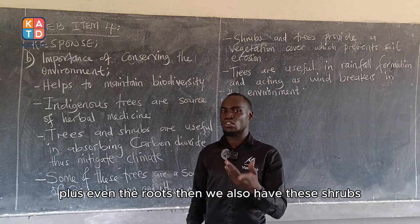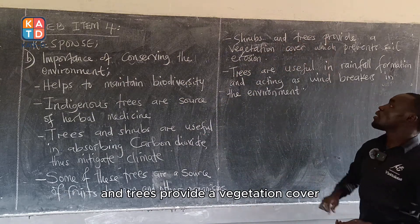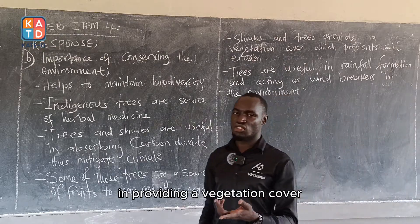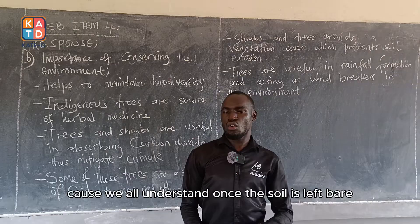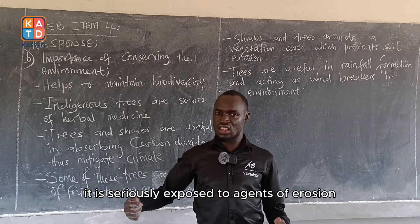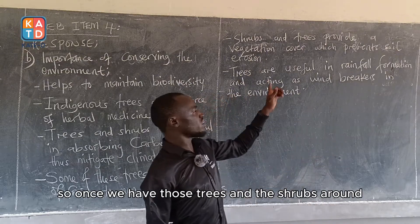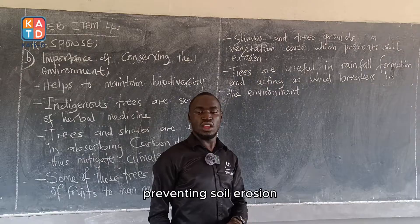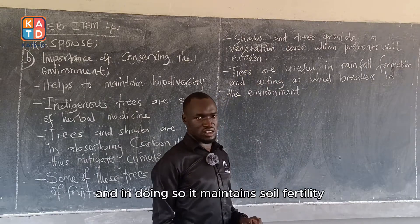These shrubs and trees also provide a vegetation cover. By providing vegetation cover, they are preventing soil erosion, because once soil is left bare it is seriously exposed to agents of erosion. With trees and shrubs around, they provide vegetation cover that prevents soil erosion and in doing so maintains soil fertility.